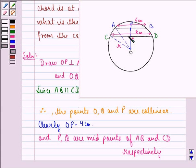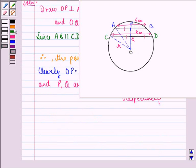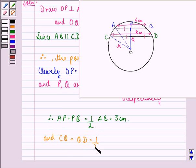Therefore, we can say that AP is equal to BP and CQ equals QD. Therefore, AP is equal to PB is equal to half of AB, that is 3 cm, and CQ is equal to QD is equal to half of CD, that is 4 cm.